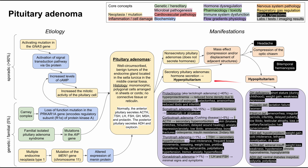The same condition — pituitary adenoma — can manifest in many different ways. It can secrete any of these hormones, or it can grow large enough to prevent the secretion of any of these hormones, resulting in a very varied presentation. This has been a mechanism of disease map for pituitary adenoma. I hope it was helpful and thank you for listening.